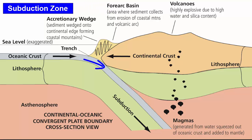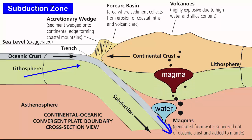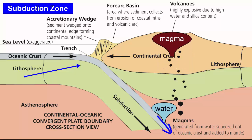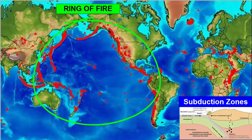Subduction zone magmas are produced by water-rich oceanic crust sinking into the mantle. As the descending oceanic crust moves into areas of higher and higher pressure, it is squeezed, and the water that was soaked up by the seafloor rocks is released, rising upwards into the wedge of mantle rock trapped between the subducting plate and the overriding plate. That water reduces the melting temperature of the rocks, and the mantle will partially melt, producing magmas that rise to the surface and form volcanoes.